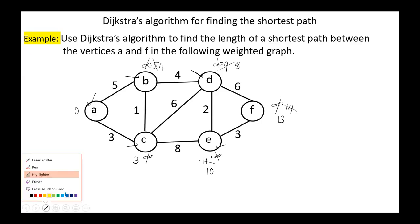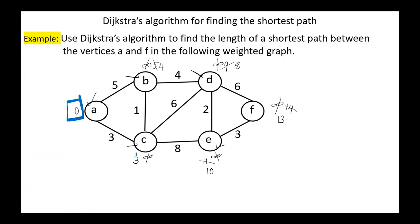Now we have the distances from A to all other vertices. The shortest path from A to B is 4, to C is 3, to D is 8, to E is 10, and to F is 13.